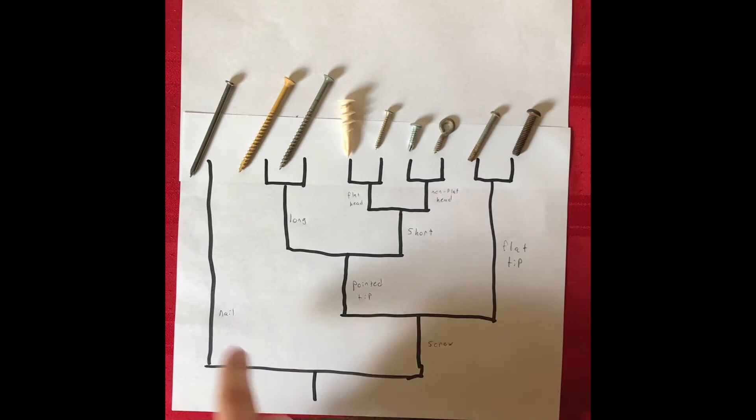My phylogenetic tree is a rooted tree. This is because we can see that there is an outgroup that the rest of the OTUs can be compared to to infer the order of divergence. The nail is the outgroup because it diverged earliest from the rest of the screws.